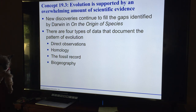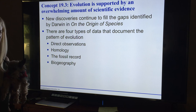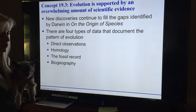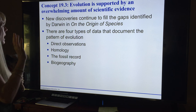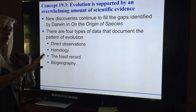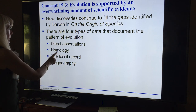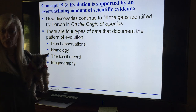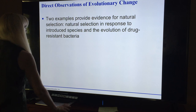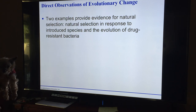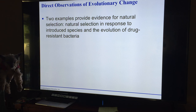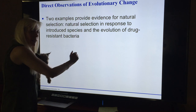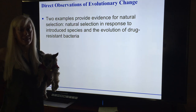Natural selection can only increase or decrease heritable traits that vary in a population. The traits that are adaptive will vary with different environments. Evolution is supported by an overwhelming amount of evidence. New discoveries continue to fill in the gaps. Four types of data: direct observations, homology — 'homo' means the same — the fossil record, and biogeography.